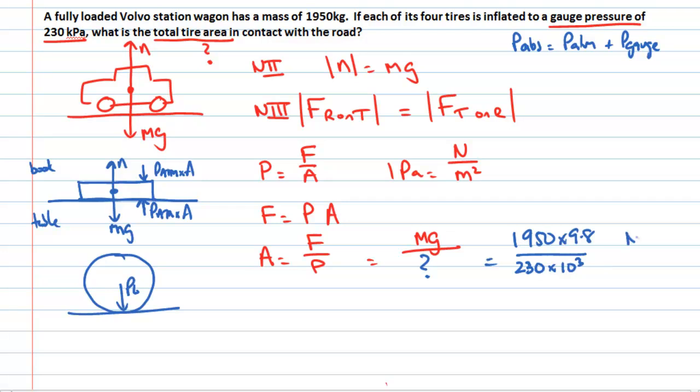This is in newtons. This is in pascals. So we can pop that number in our calculator. And that's equal to 0.0831 meters squared which is 830 centimeters squared if you do the unit conversion. Is that reasonable?